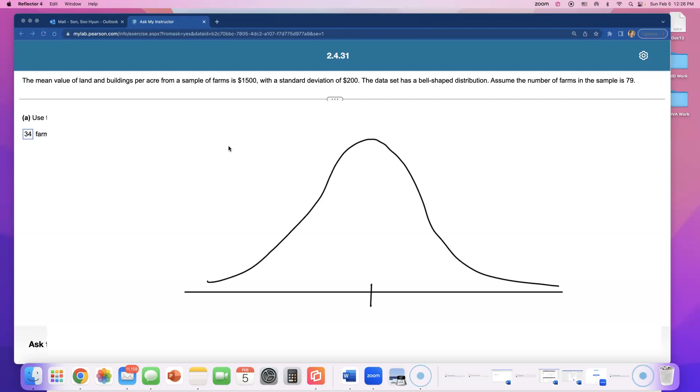Put the mean in the middle: 1500. Go three to the right by adding the standard deviation. If you do 1500 plus 200, you're at 1700. 1700 plus 200 is 1900, and if you add another 200 you'll go to 2100.